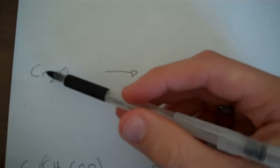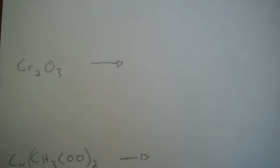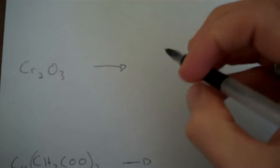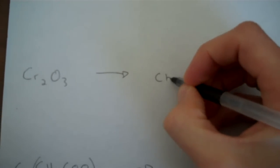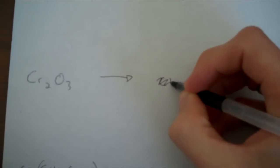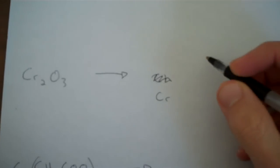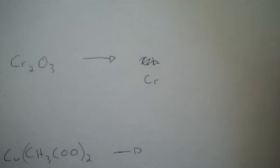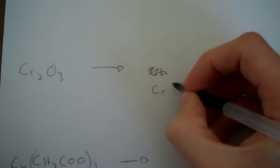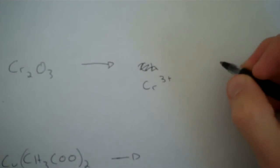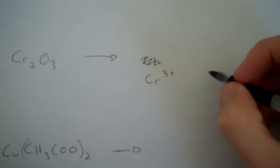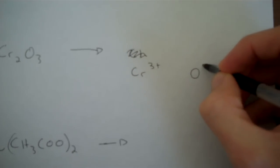Another example, Cr2O3. Cr is chromium ion. And I know that Cr is always 3+, and oxide O is always 2-.